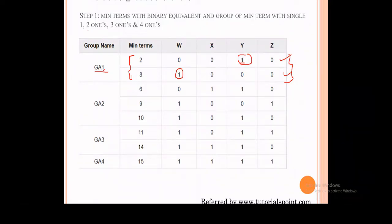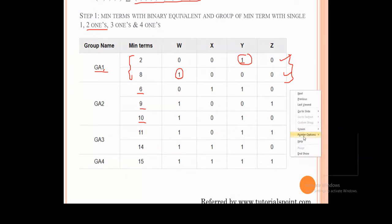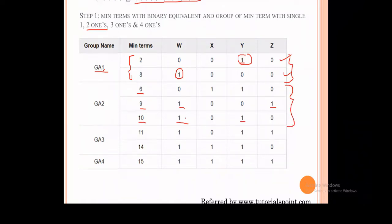Next, we find minterms with two '1's in their binary representation. Minterms 6 (0110), 9 (1001), and 10 (1010) all have two '1's. These three minterms are grouped together and called GA2.